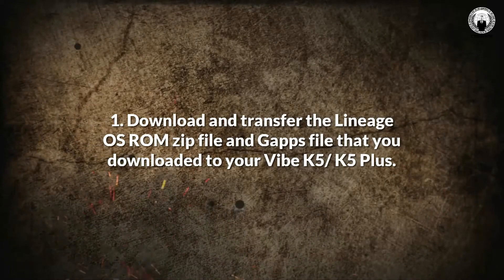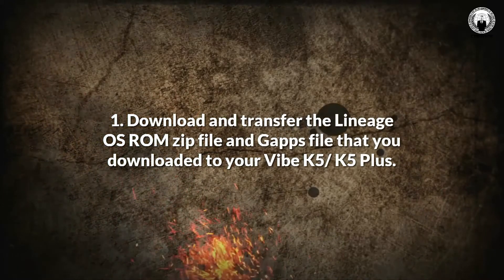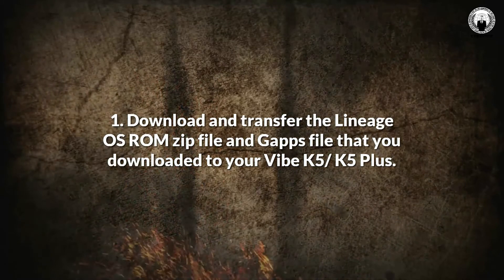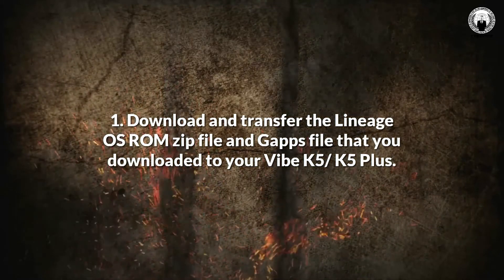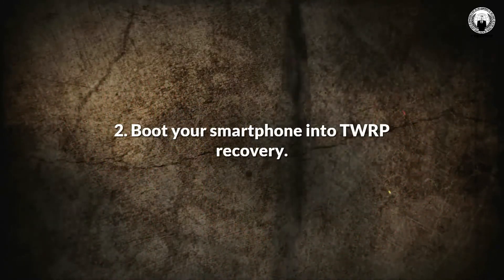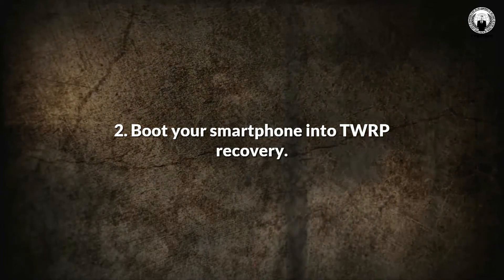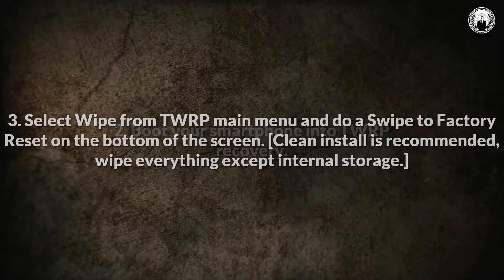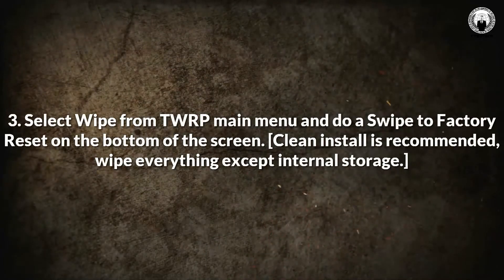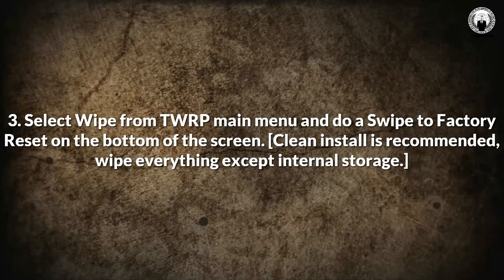Step 1: Download and transfer the Lineage OS ROM ZIP file and GApps file to your Vibe K5 and K5 Plus. Step 2: Boot your smartphone into TWRP Recovery. Step 3: Select Wipe from the TWRP Main Menu and do a swipe to Factory Reset at the bottom of the screen.